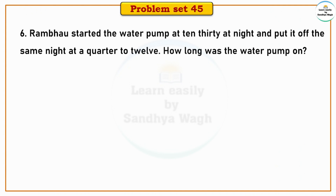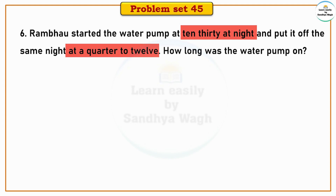Question 6: Rambhav started the water pump at 10:30 at night and put it off the same night at a quarter to 12. How long was the water pump on? A quarter to 12 means 11:45. So Rambhav started the pump at 10:30 at night and stopped it at 11:45.